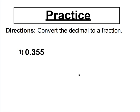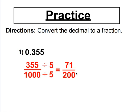Try this one — use your place value to say it out loud, then simplify. This number goes to the thousandths place, so it says 355 thousandths. Written as a fraction, that's 355 over 1,000. Finding a common factor of 5 to divide, the final answer is 71 over 200.